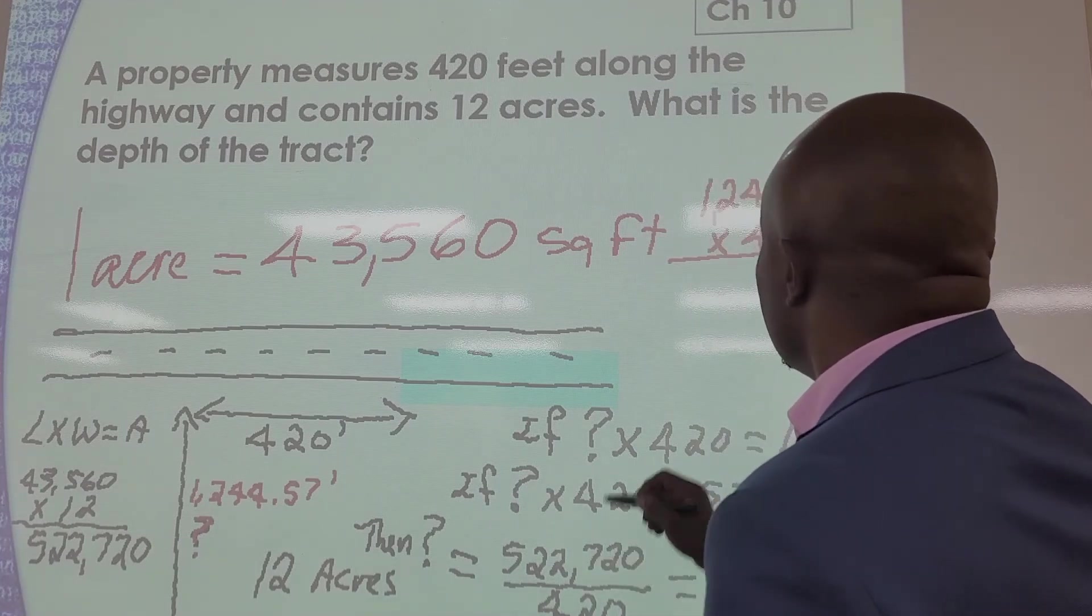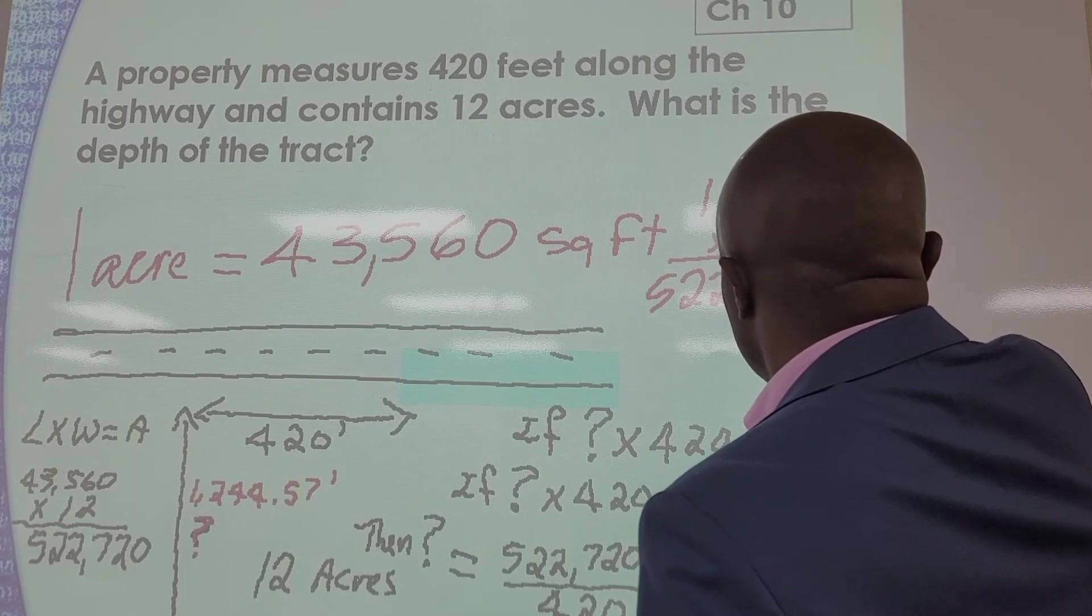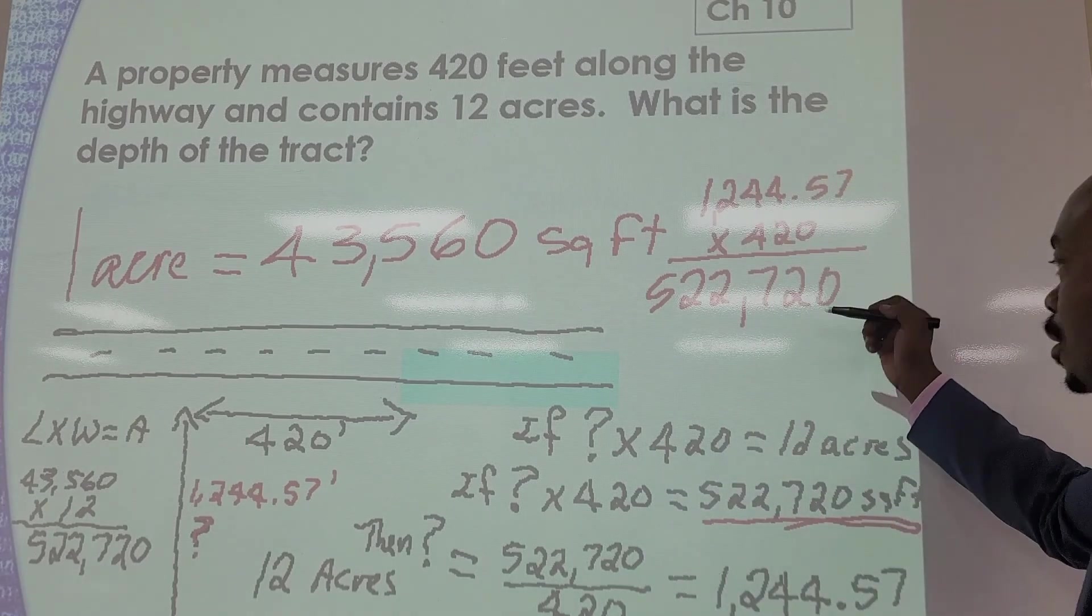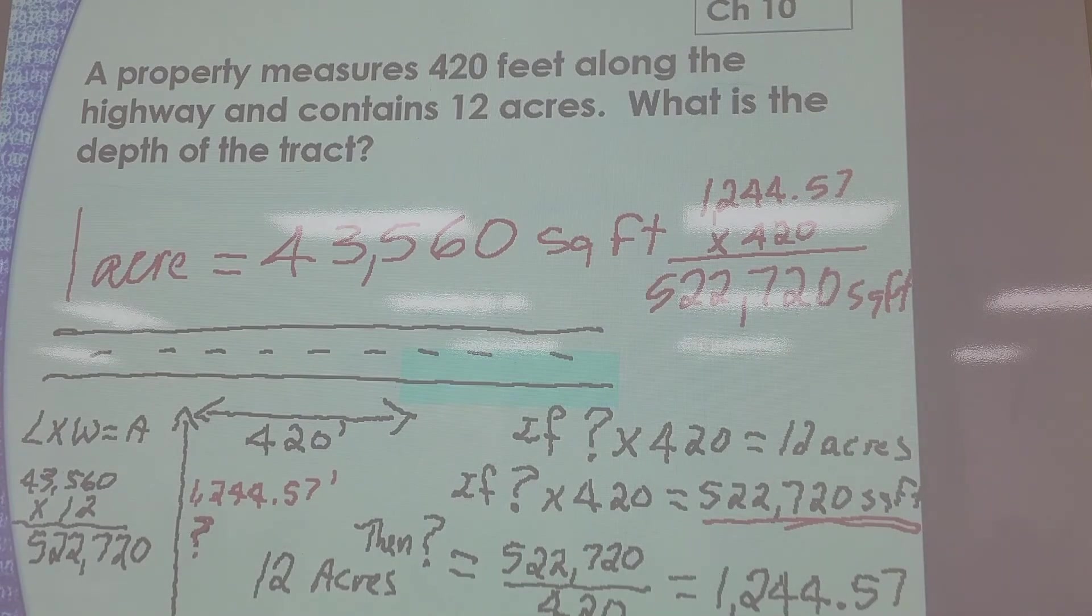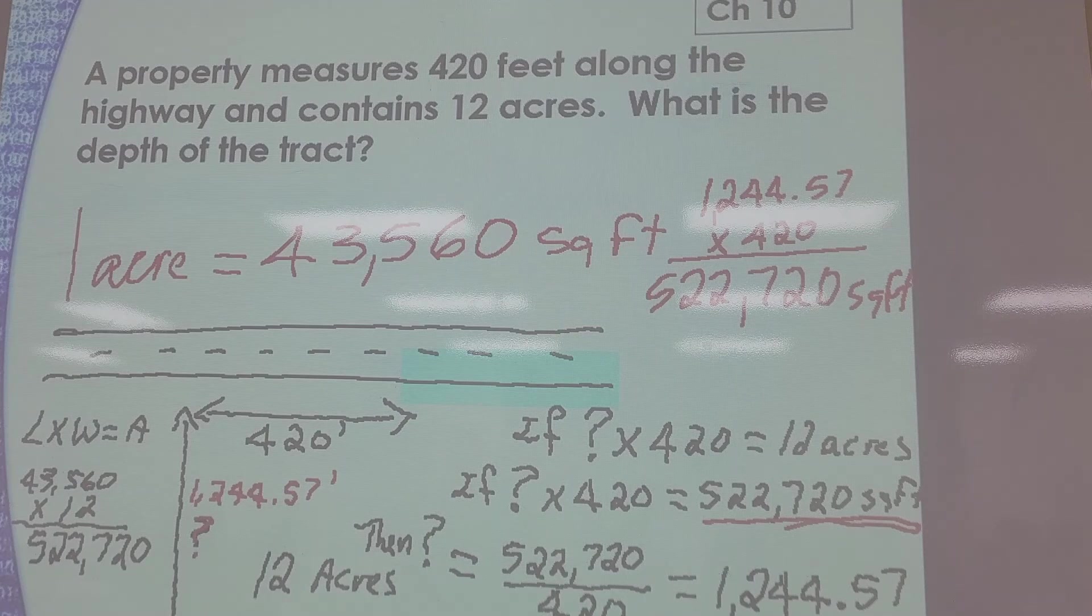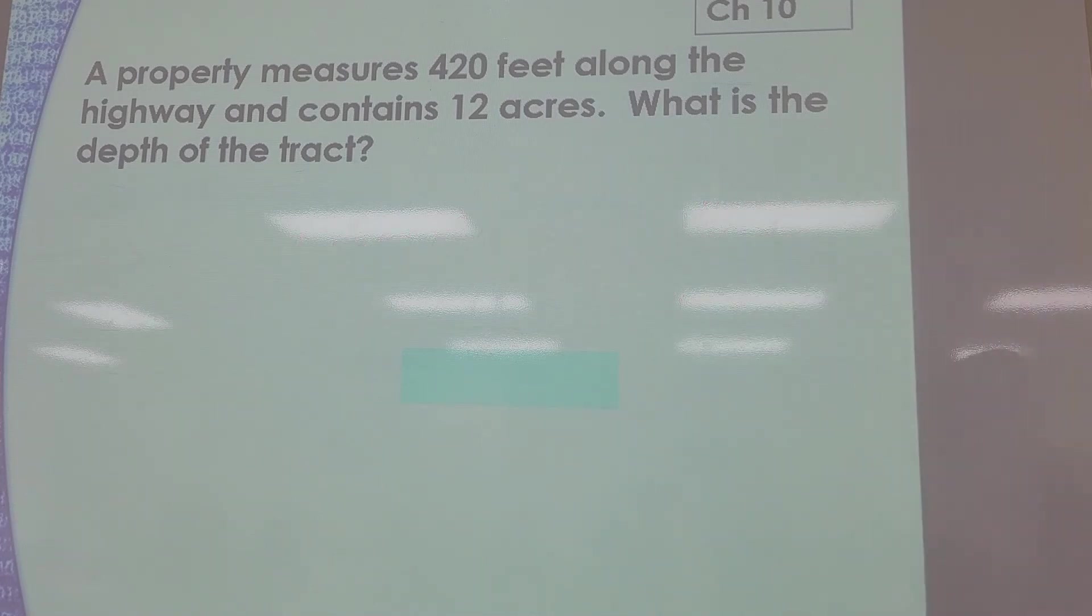522,719, roughly slightly off, 720. So it should be this answer, 522,720. Make sense? Everybody gets that? So don't trust, like I said, trust but verify. But this in essence gives you everything we need here.